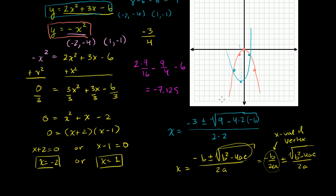We've found our two points of intersection — right there and right there. And when you graph it, it looks pretty good.